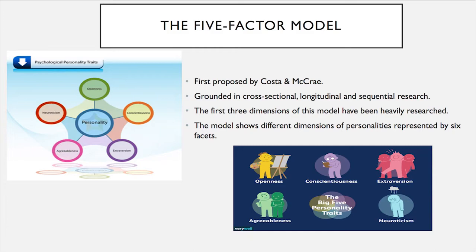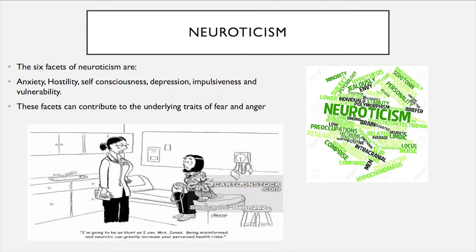The first dimension is neuroticism. The six facets of neuroticism are anxiety, hostility, self-consciousness, depression, impulsiveness, and vulnerability. These facets can contribute to the underlying traits of fear and anger, which are often associated with people who tend to be nervous, high-strung, tense, worried, or pessimistic. It also includes depression, which can lead to shame and sorrow.